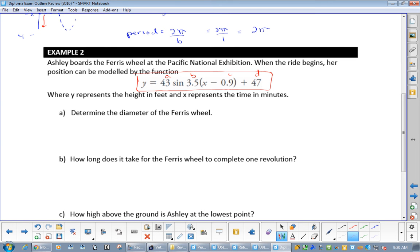Now the equation, or determine the diameter. Now remember, this is our midline, right? So our midline is 47. And the Ferris wheel is going to go up to 43, right? It's going to be going down 43. So you can see that the diameter of our Ferris wheel would be 2 times 43, which would equal 86 meters is our diameter.